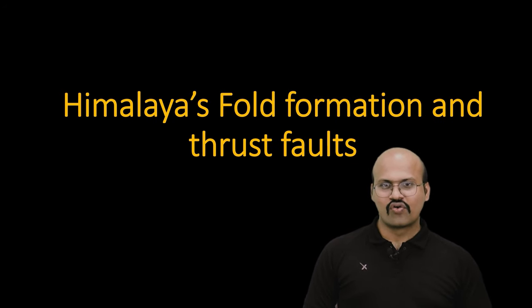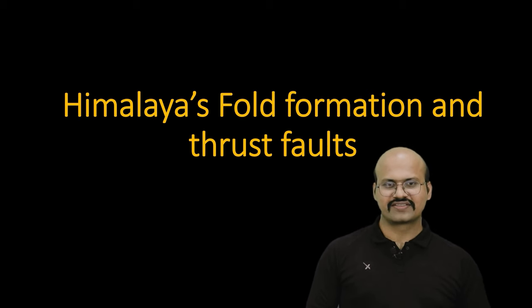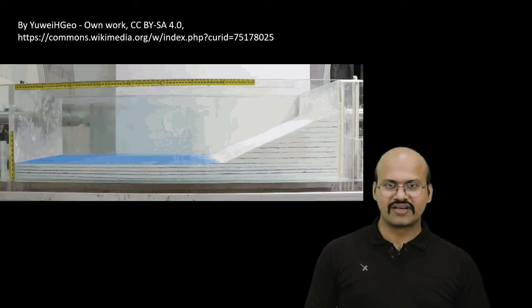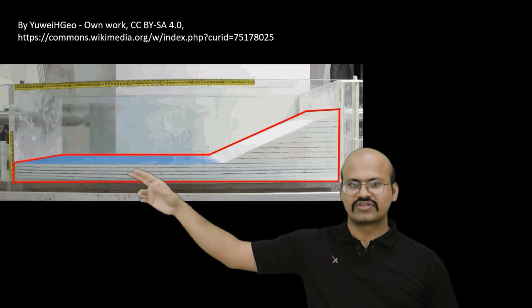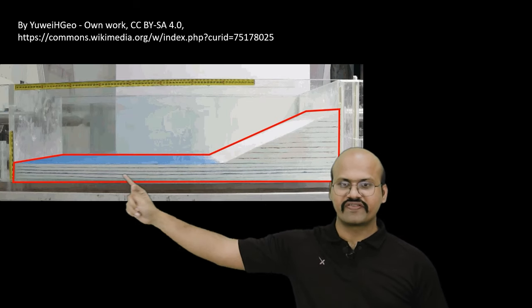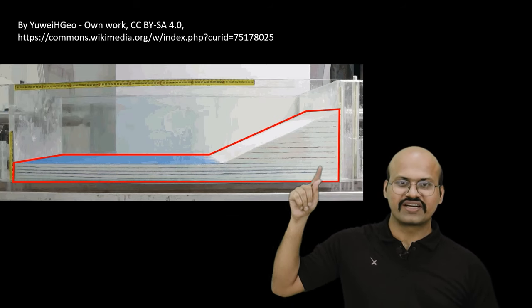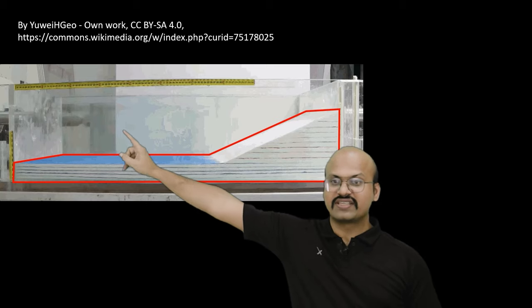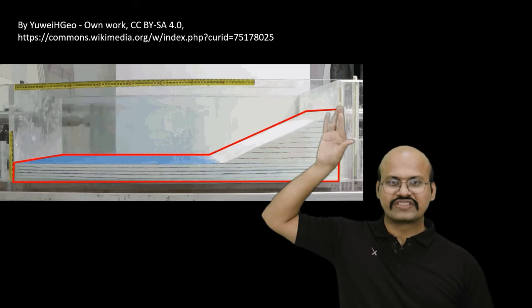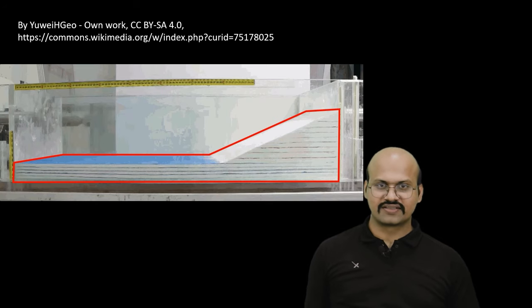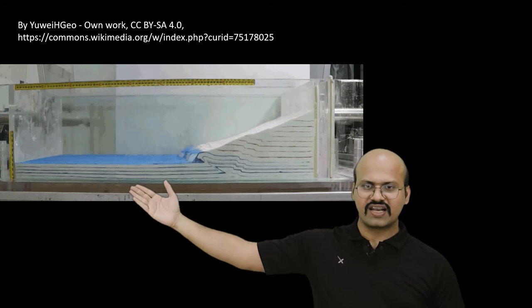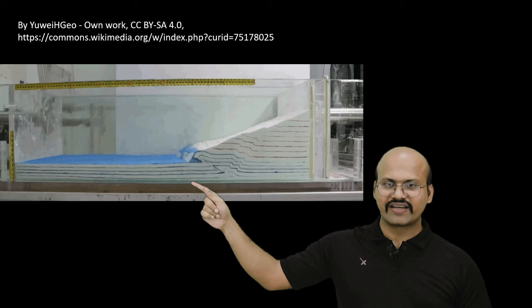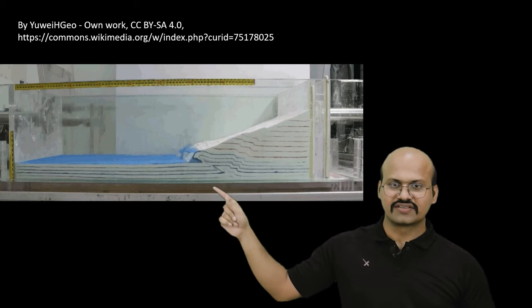Let's start with understanding what these folds are and how they are formed. Before understanding folding in Himalayas, let's look at a sandbox experiment. We can see there is sand all around — in the red border region there is blue sand and white sand, with layers of different colors. This is a box where one side is fixed and the other side has a plunger which can be used to force the sand in one direction. When we use this plunger, we can see that the different layers of sand are folded.